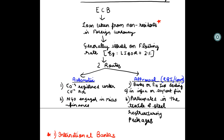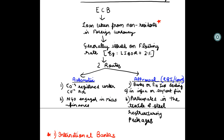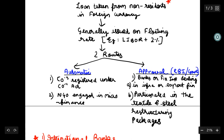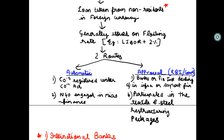Automatic root kaun kis ko milta hai? Companies registered under the Companies Act — Indian companies ko — agar wo register hain Companies Act ke under. Saath hi, NGOs which are engaged in microfinance. Microfinance matlab small-scale finance jo provide karti hain micro aur medium companies ko. Yeh dono categories automatic route ke under aati hain.